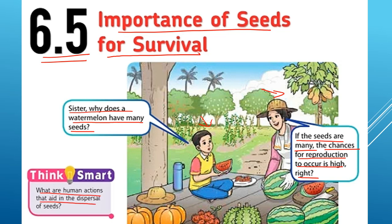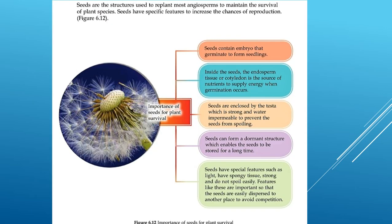What are human actions that aid in the dispersal of seeds? For example, when humans eat fruit and throw the seeds away, that actually helps in seed dispersal. Seeds are the structures used to replant most angiosperms and maintain the survival of plant species.